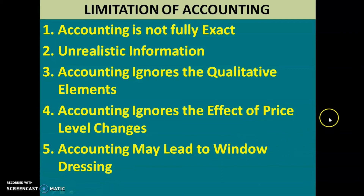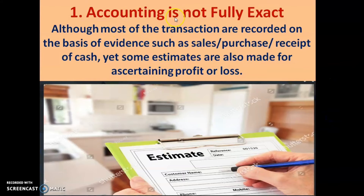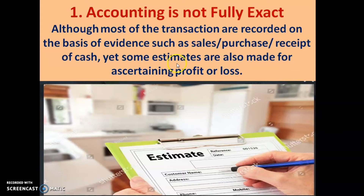The first limitation is accounting is not fully exact. Although most transactions are recorded on the basis of evidence such as sales, purchase, and receipt of cash, yet some estimates are also made for ascertaining profit or loss. Estimates, like weather forecasting, are not always correct — sometimes they may go wrong. Same is the case with accounting; sometimes we have to make estimates, and that prediction may sometimes go wrong. So we cannot fully depend on accounting, and hence it is stated that accounting is not fully exact.